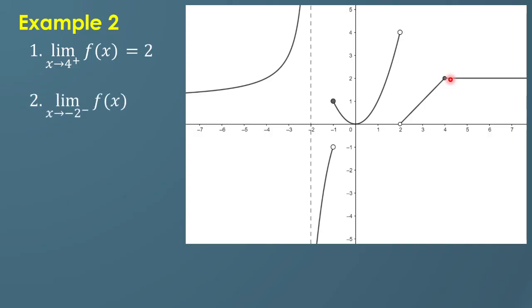The limit of f of x as x approaches negative 2 from the left — this is negative 2 on the left-hand side. Since this is a vertical asymptote, the y values get larger and larger as x approaches negative 2, so the answer is infinity.